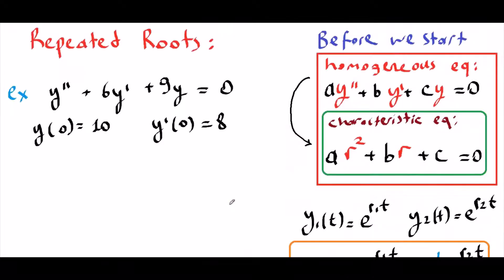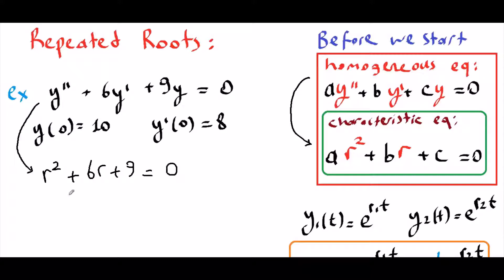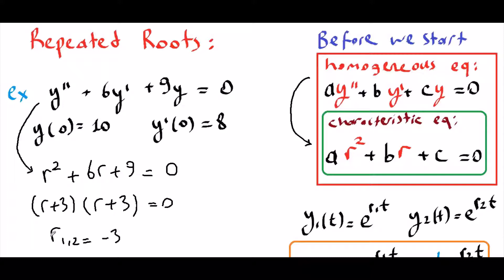Let's work on the real example. We have y'' + 6y' + 9y = 0. We are going to convert this into our characteristic equation: r² + 6r + 9 = 0. If you factor out this trinomial, you obtain (r + 3)(r + 3). And if you solve for r, you obtain r1 = r2 = -3.